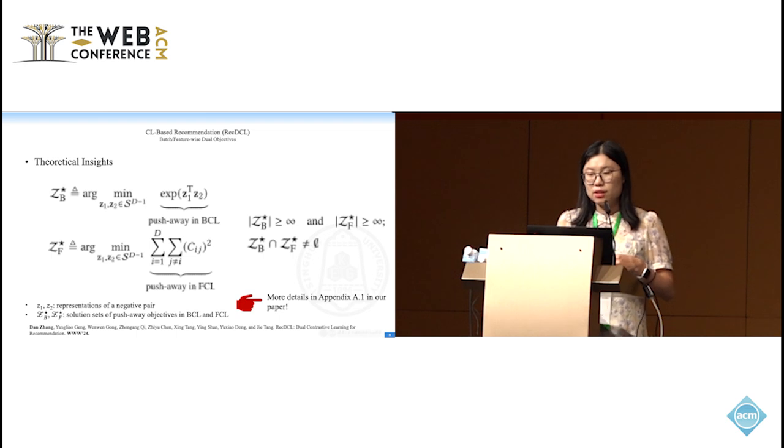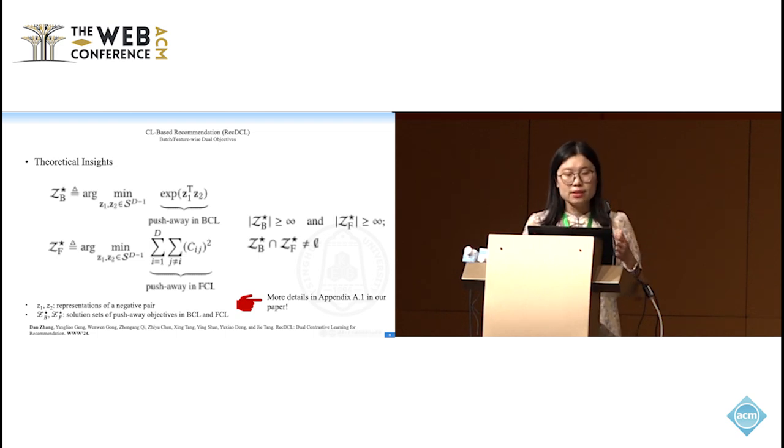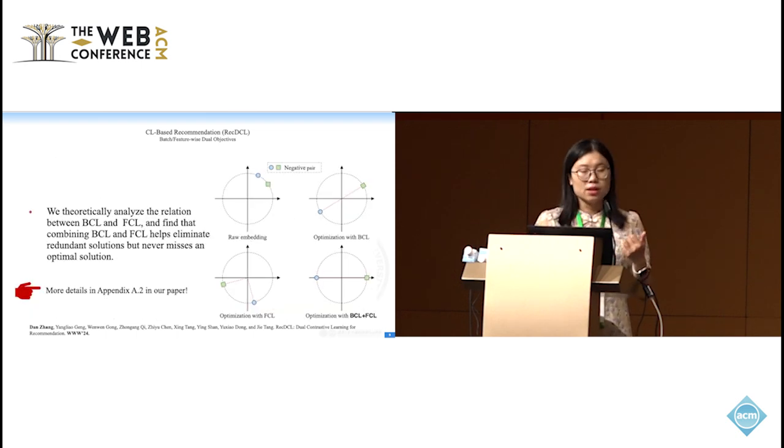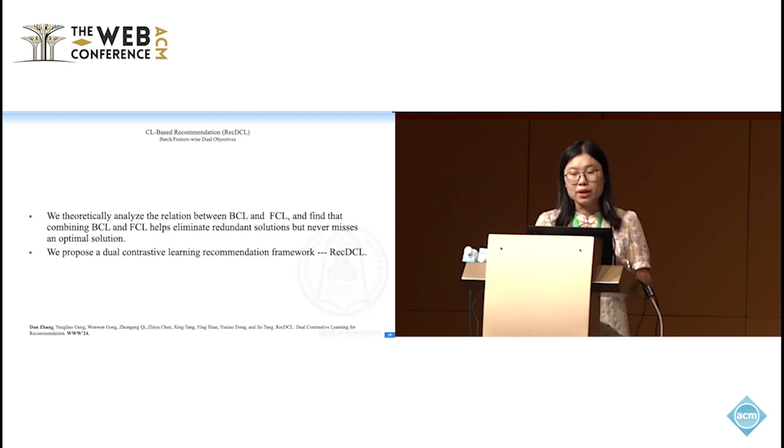We firstly investigated the native connection of the objective between BCL and FCL. This is the objective for BCL and FCL, and we can see that if these two metrics are very standard, the objective between BCL and FCL can be transferred to each other, and we have provided some theoretical details in our paper. Besides, we present a cooperative to show the cooperative benefit using BCL plus FCL, and we can find that combining BCL and FCL can help eliminate the redundant solution but never miss an optimal solution, and we also provide some theoretical details in our paper.